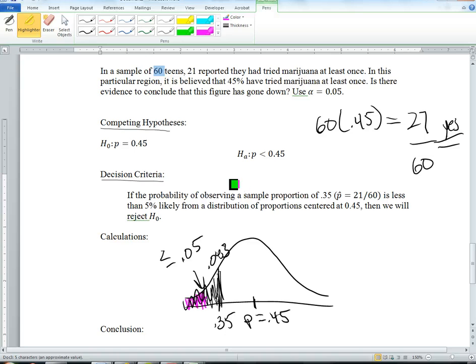Now, even though the sample is lower, that seems to be within reason that if, in fact, the population is 45% of teens have tried it, then it's not unreasonable for, in a sample of 60 teens, to get only 21 or fewer that have tried it before. So we would fail to reject the null hypothesis. We just simply cannot conclude that it's gone down. The sample data is just not strong enough. There's still a reasonable chance that this could very well happen in this distribution.